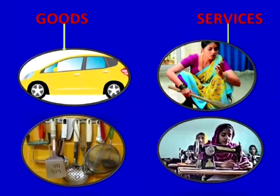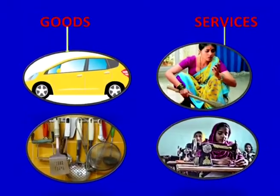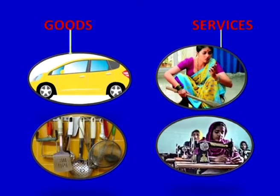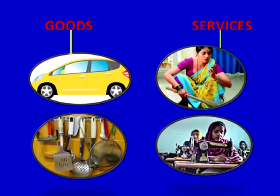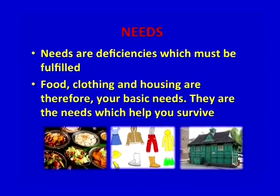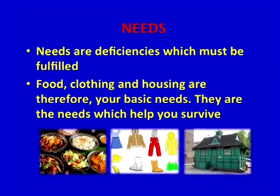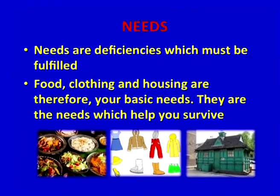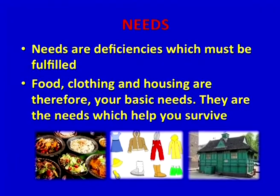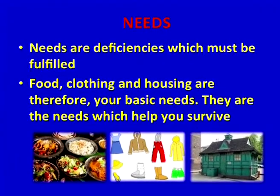These are the different goods — for example, a car — and these are the different services. Needs are deficiencies which must be fulfilled. Food, clothing and housing are therefore your basic needs.